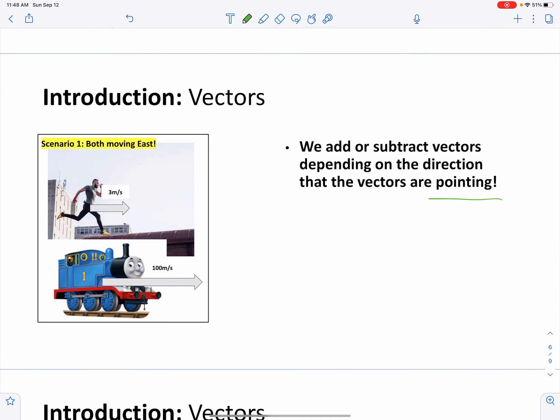So, what does that mean? Well, go back to our example of our friend on top of a train. If he's running in the same direction as the train from the point of view of the ground, his overall velocity is the velocity of the train plus his velocity. How do we know it's added up? Because the vectors are in the same direction.